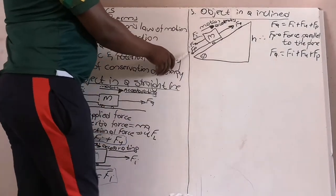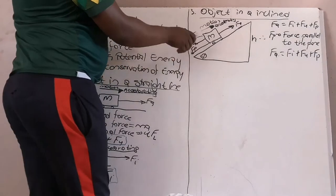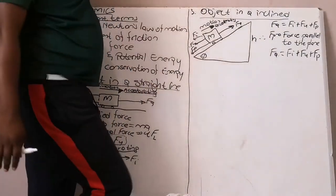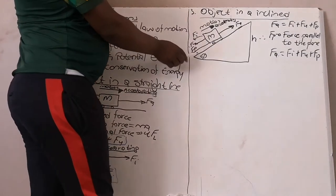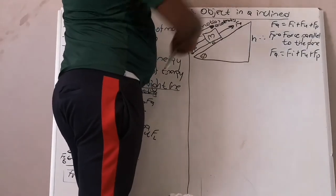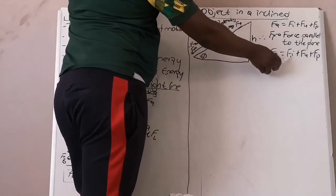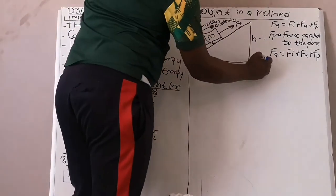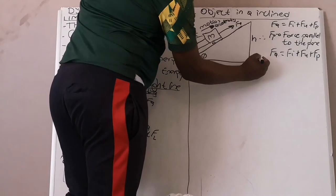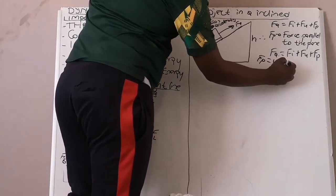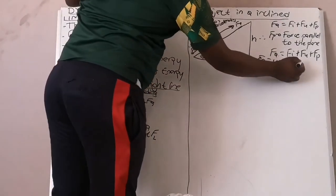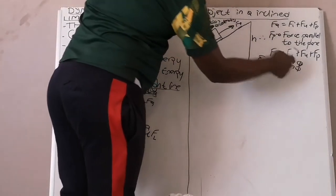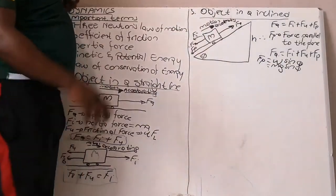You have your inertia force, which always opposes your applied force. And then you have the force parallel to the plane — this is a new force not present on a straight line. The force parallel to the plane will always be there if your object is going up an incline. The new equation is: FA equals FI plus FF plus FP (force parallel to the plane), where FP equals W sin θ, or Mg sin θ.